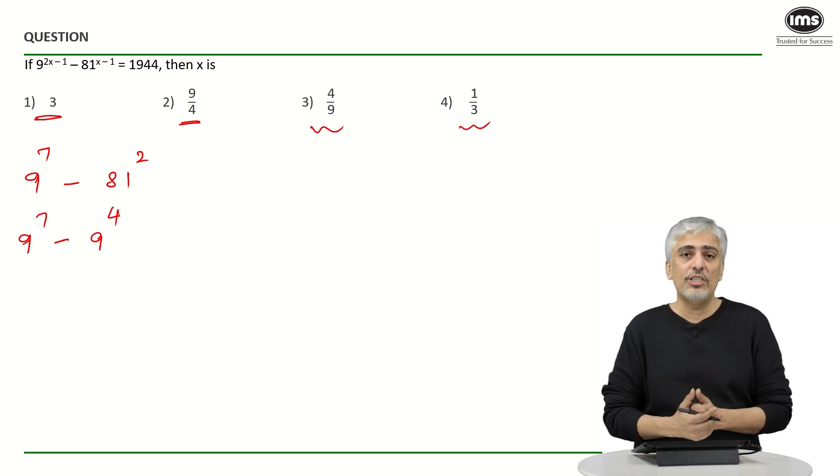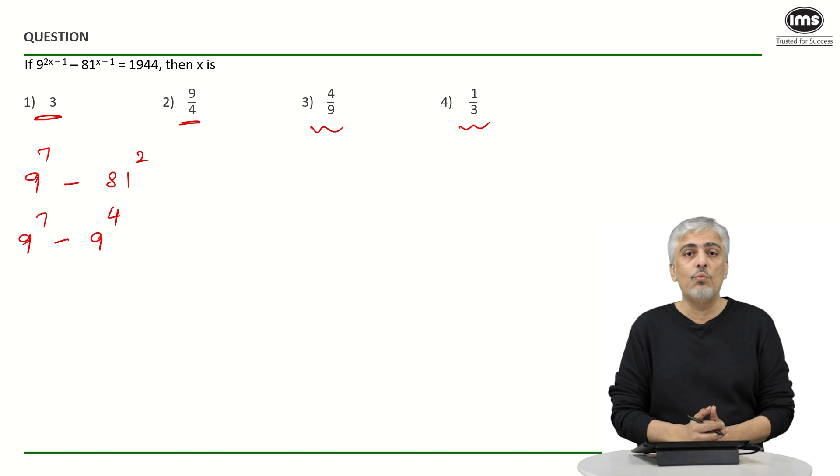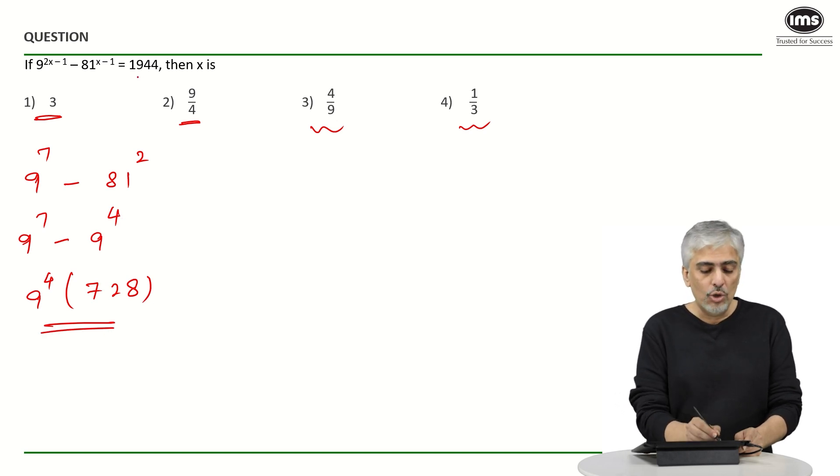In CAT now you have calculators also allowed. So if you want to do, if you don't know this question by other methods, this could have been one more way of looking at it. So 9 raised to 7 minus 9 raised to 4 if you solve, you can take 9 raised to 4 common. You will be left with 9 cube which is 729 minus 1 which is 728. Check whether 1944 will be the answer. I don't think so.